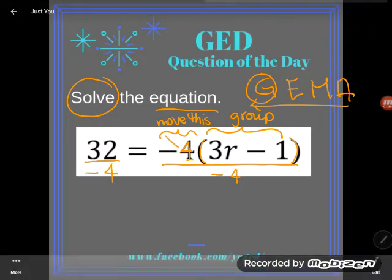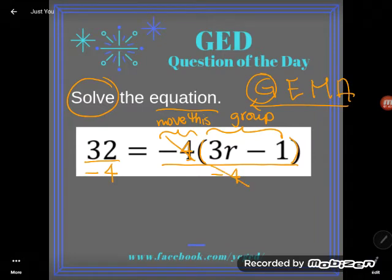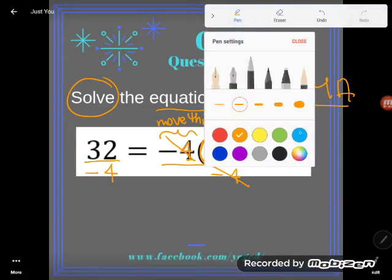So on this right-hand side, multiplying by negative 4 and dividing by negative 4 are opposites. So they just cancel, and the only thing I have left is that group. I don't need a parentheses if that's the only thing I have left.